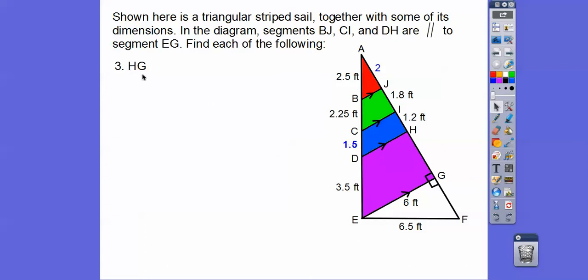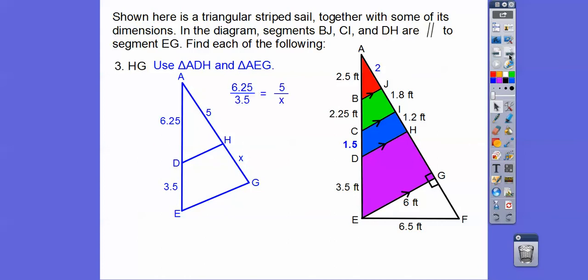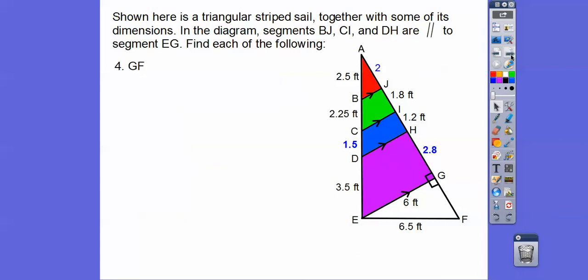Now let's look for HG. So we're going to do this again with this pair of triangles. We're going to add these three lengths and add these three lengths. When we add 2 plus 1.8 plus 1.2, we get 5. We're looking for this length which is x. Here's 6.25 from this plus this plus this, and then here's the 3.5. So now we can do top over bottom, top over bottom, cross multiply and we get 2.8. So we're going to plug in 2.8 right there.